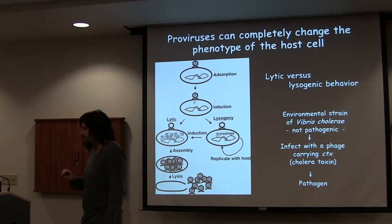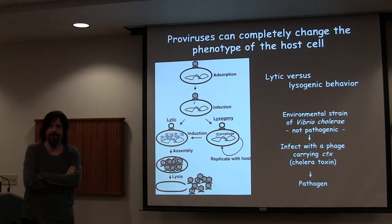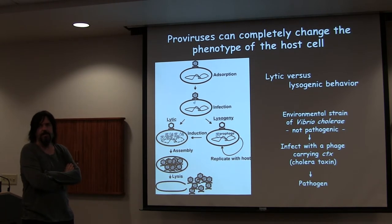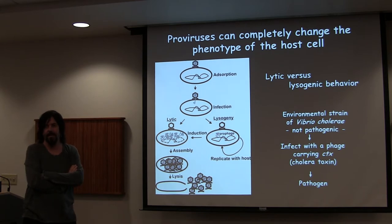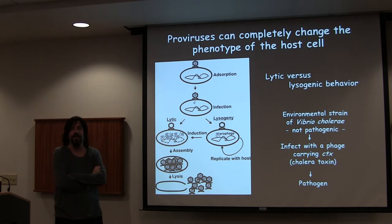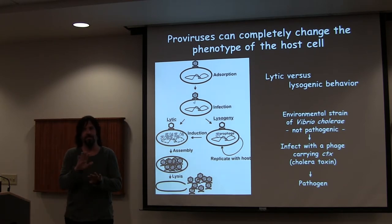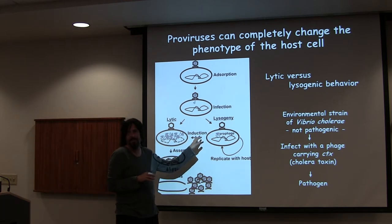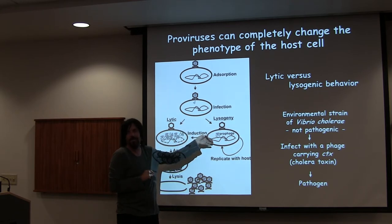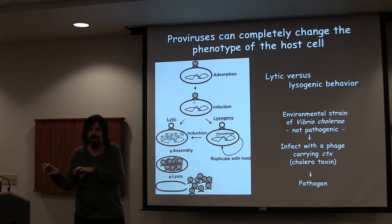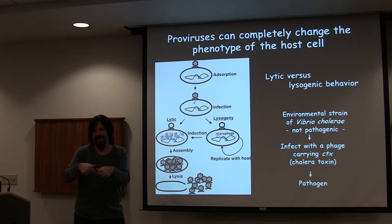Question: a prophage that's induced and produces progeny — are those progeny still lysogenic? When a prophage comes out of the cell, those viral progenies could look to integrate back into a host rather than going lytic. They can become temperate again, yes, but most of the time they would actually just go through another lytic cycle. In lambda research, they've actually manipulated how often you get the integration cycle versus the lytic cycle — you can totally alter that. Both the insertion and excision cycles can be manipulated very precisely.